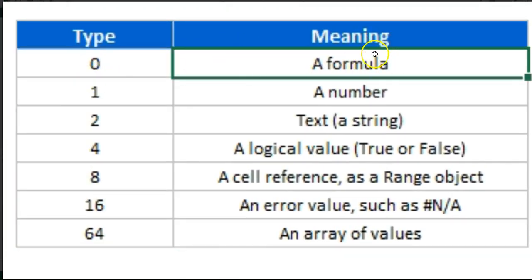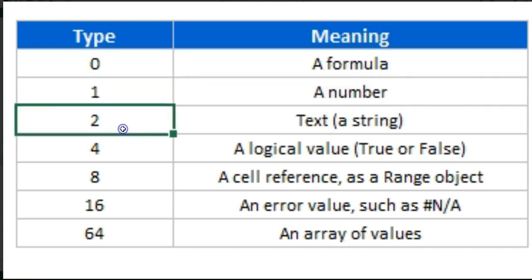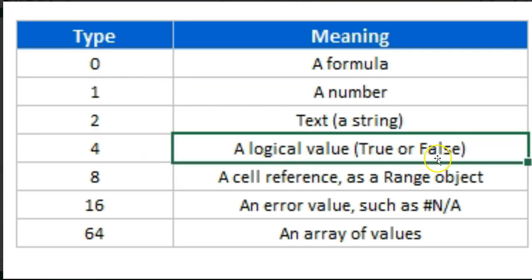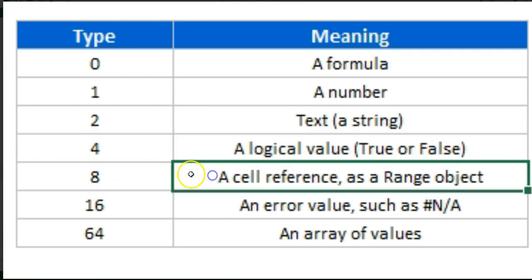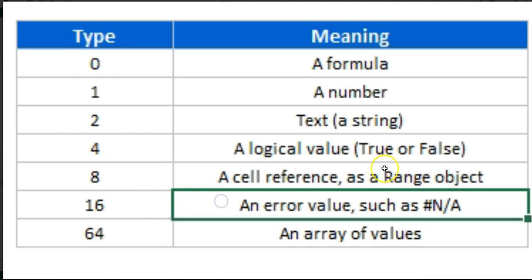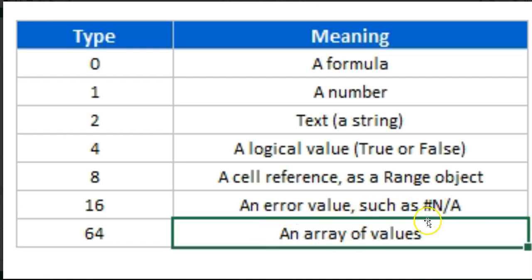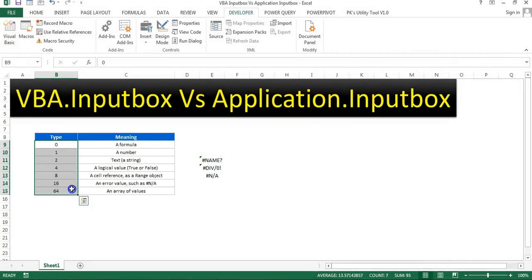The first type is 0, which means a formula. The second is 1 for a number, then 2 for text, 4 for a logical value (true or false), 8 for a cell reference or Excel range, 16 for an error input, and 64 for array values. I'll now explain all types in Application.InputBox.